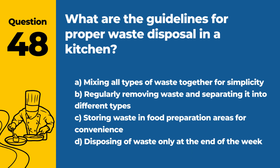Question 48: What are the guidelines for proper waste disposal in a kitchen? a. Mixing all types of waste together for simplicity. b. Regularly removing waste and separating it into different types. c. Storing waste in food preparation areas for convenience. d. Disposing of waste only at the end of the week. Answer: b. Proper waste disposal in a kitchen involves regularly removing waste from the premises and separating it into different types, such as recyclables, compostables, and general waste, to maintain hygiene and reduce environmental impact.